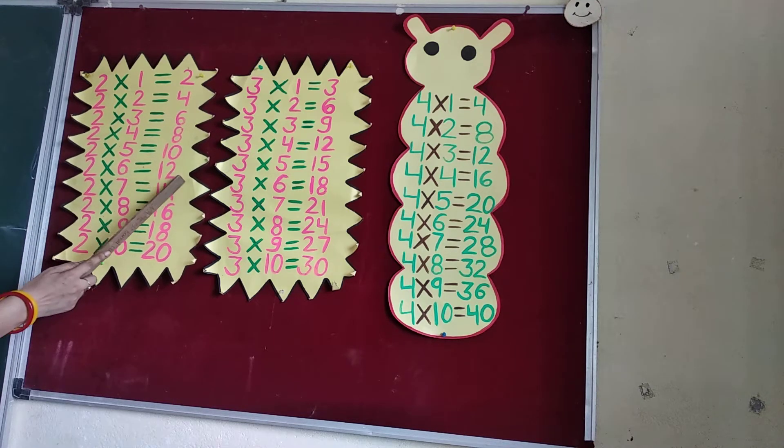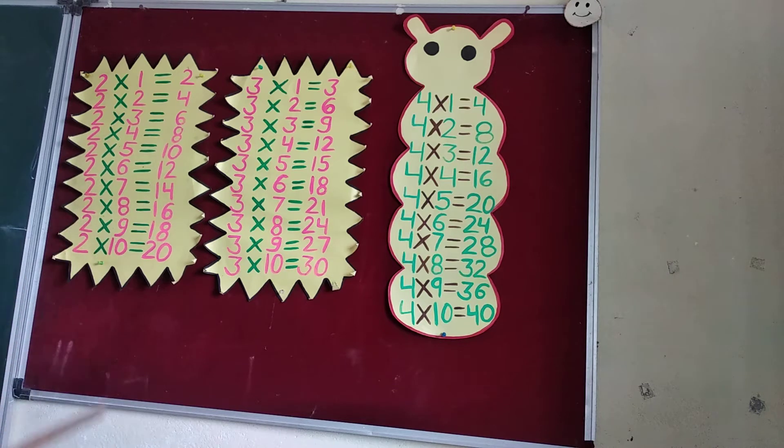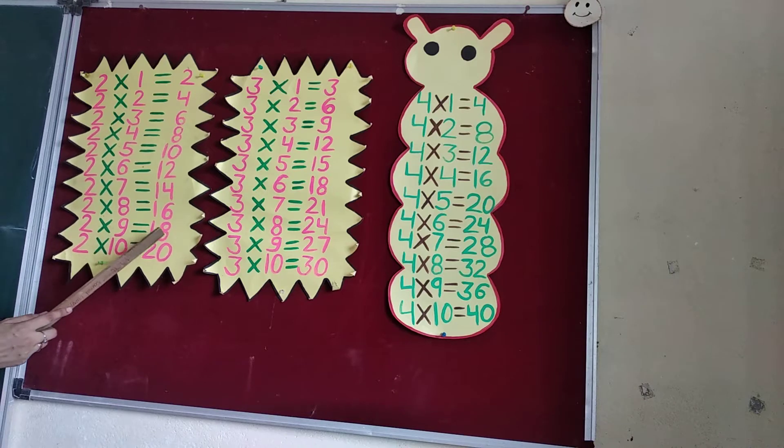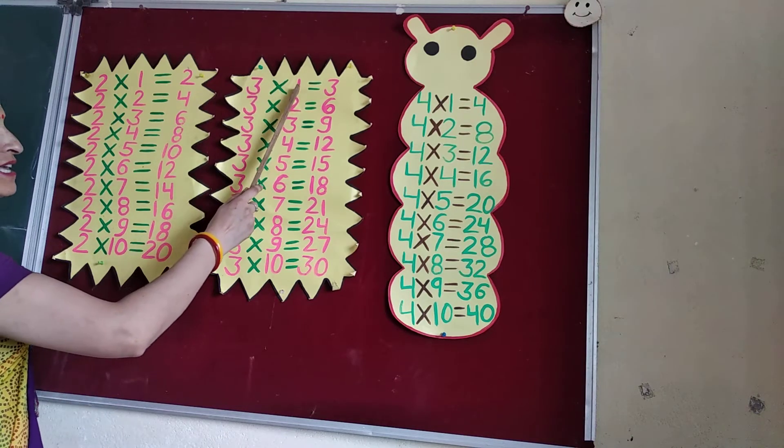2 6's are 12. 2 7's are 14. 2 8's are 16. 2 9's are 18. 2 10's are 20. 3 1's are 3.